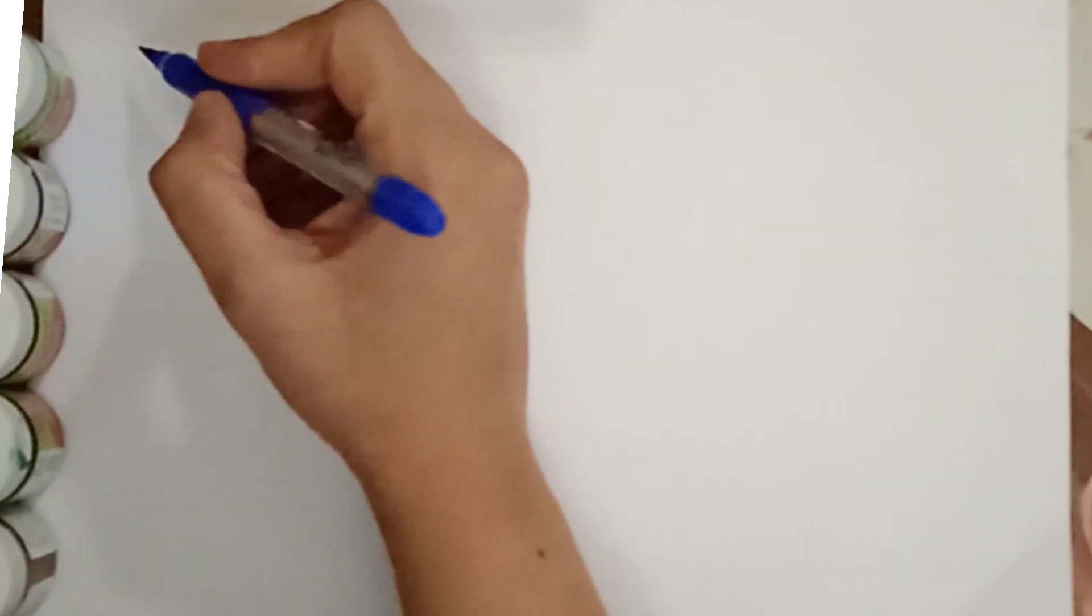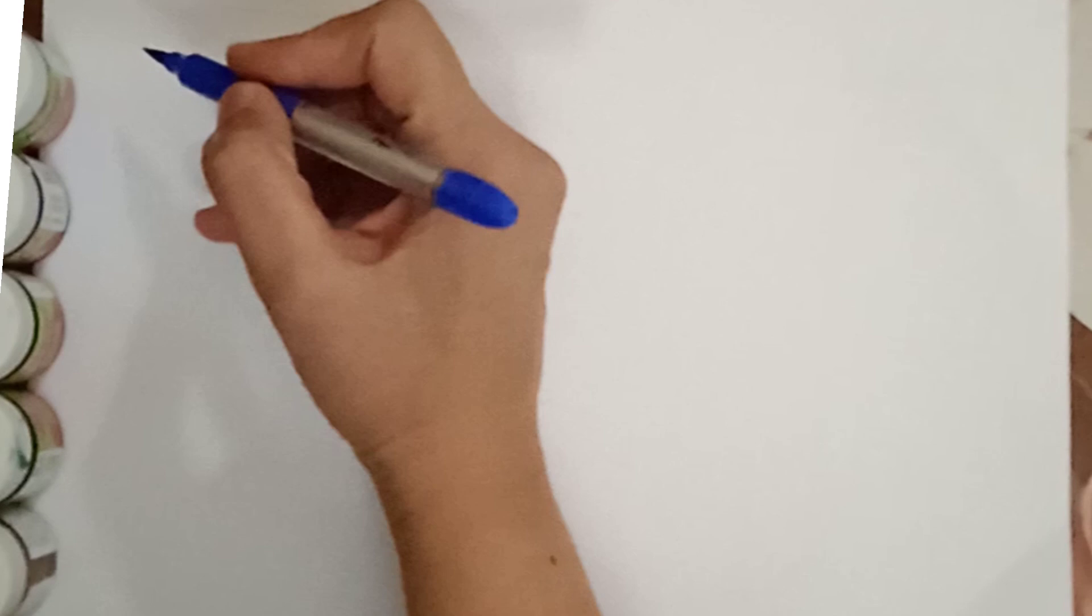Today we have a blank paper. What are we going to do with this paper? We will write this alphabet, A to Z. And we will tell you. Okay, let's start. This is our blue color. Okay, start with A.